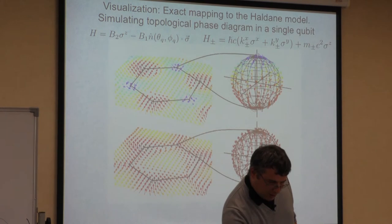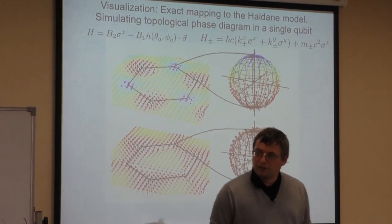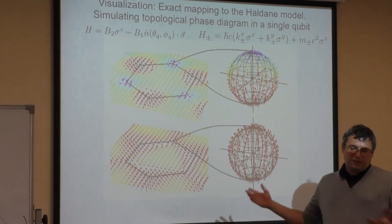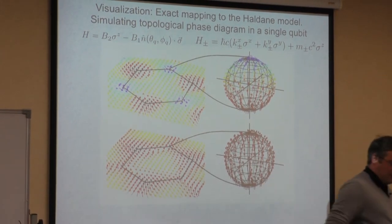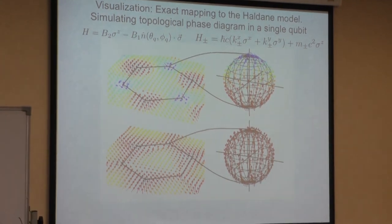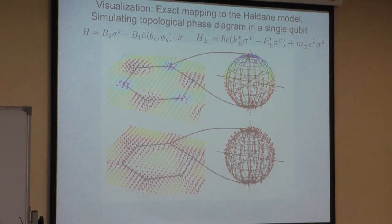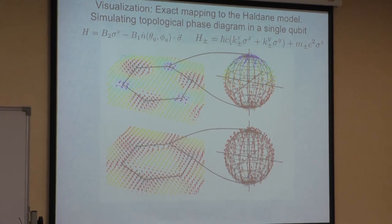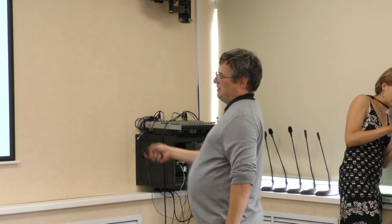Maybe one spin is not a big deal. It turns out this model is equivalent to a model of the Chern insulator—mathematically it's the same model as topological insulators. One can ask how you can define a topological transition for just one spin-1/2. The trick is that you really study a manifold of states, and the manifold of states of spin-1/2 is equivalent to one wave function of many electrons.